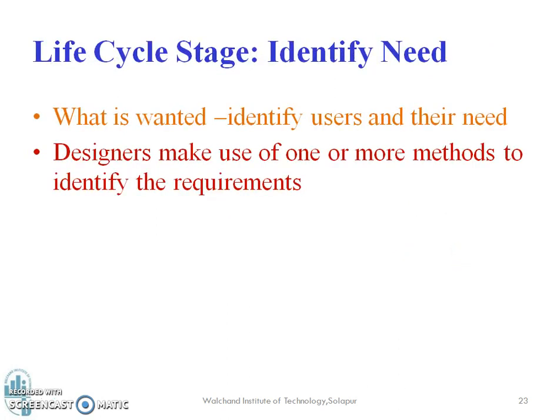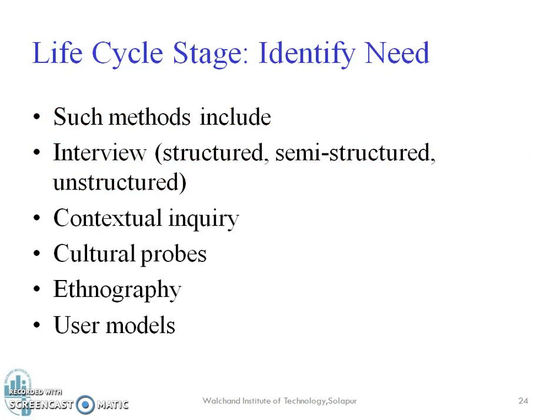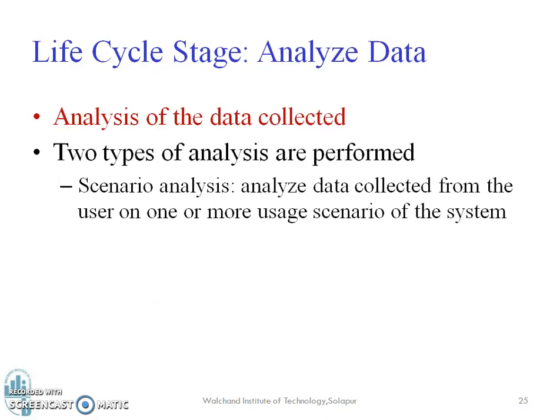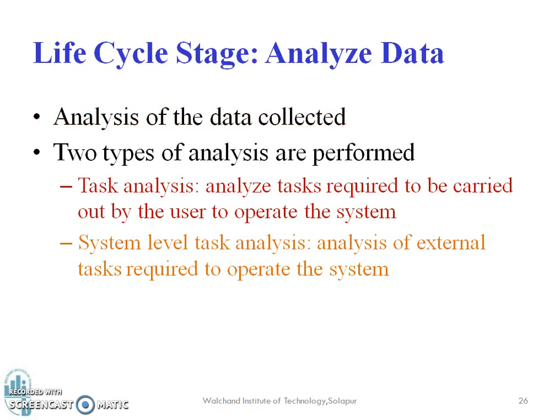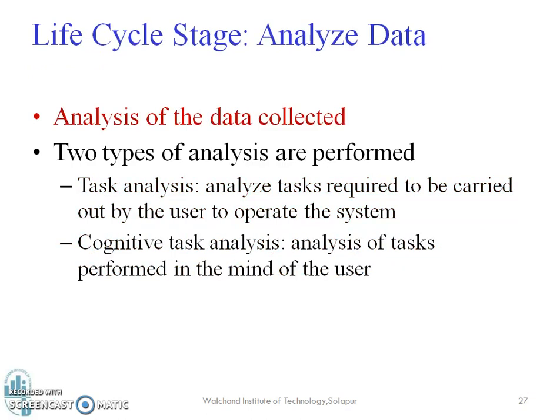In the 'identify the need' stage, we need to know what is wanted, identify the users and their needs. Designers make use of one or more methods for identifying requirements — it can be through interviews, feedback, or one-to-one meetings. After identification, you need to analyze the data. Two types of analysis are performed: scenario analysis, which involves analyzing data collected from users on usage scenarios, and system-level task analysis, which is analysis of external tasks required to operate the system.